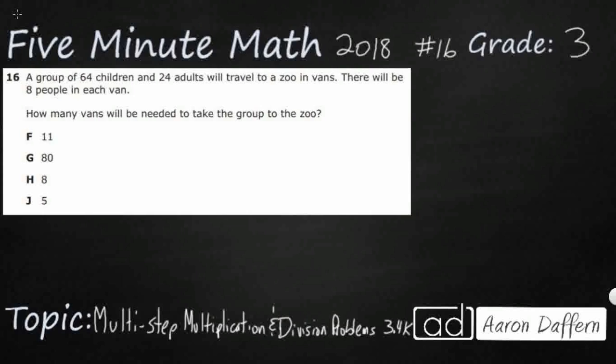So we have a group of people. We've got 64 children and 24 adults. They're going to travel to the zoo. They're going to go in vans, and there's going to be eight people in each van. So how many vans are we going to need?